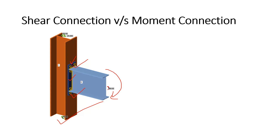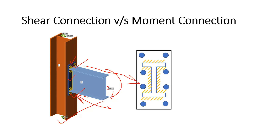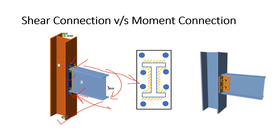The moment is transferred by generating push and pull in these bolts. Now let's look at this connection — only the web portion of the beam is connected to the column through an angle section, so this connection is a shear connection.